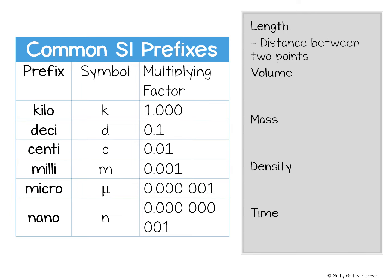In scientific measurement, length is the distance between two points. That distance might be the length of a ladybug or the distance from the earth to the moon. The size of the unit you measure will depend on the size of the object being measured. For example, the length of the ladybug is probably going to be measured in millimeters, but if you were to measure the distance between the earth and the moon, you would measure in kilometers.